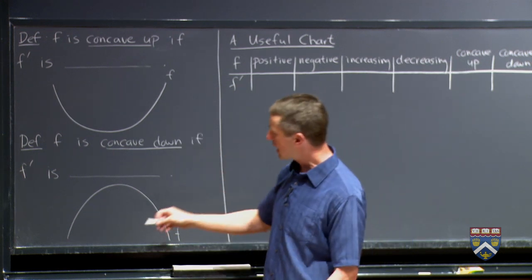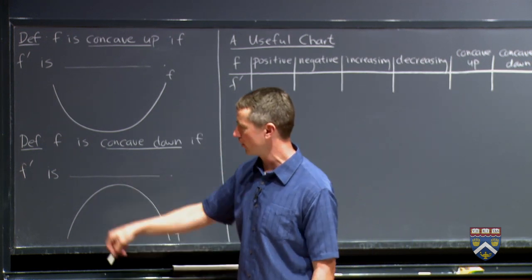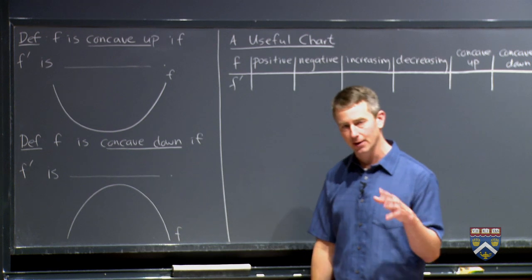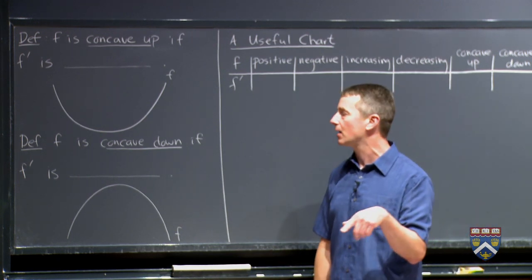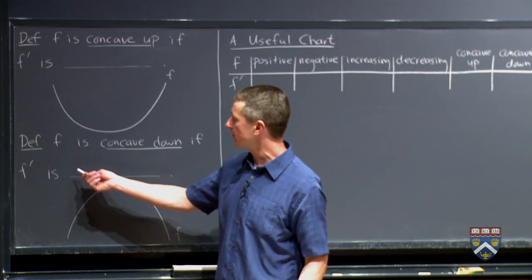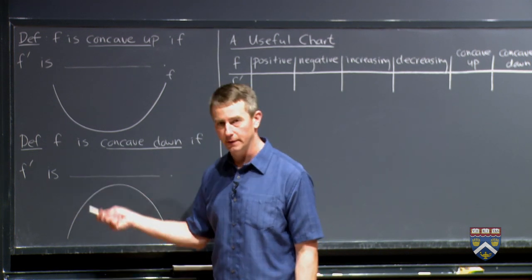Similarly, f is concave down means that the graph of f is bending downward. So look in the applet or create a graph in the applet where you've got an f, part of a graph that f is concave down and see what word you could fill in about f prime to go in this blank.